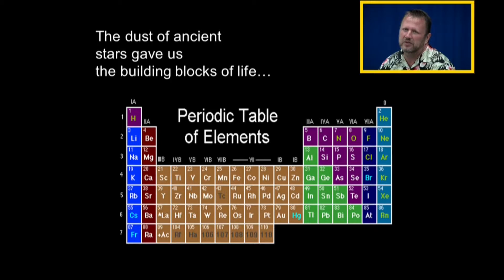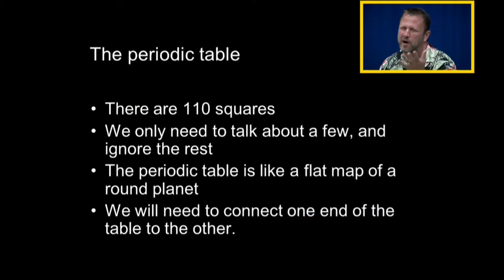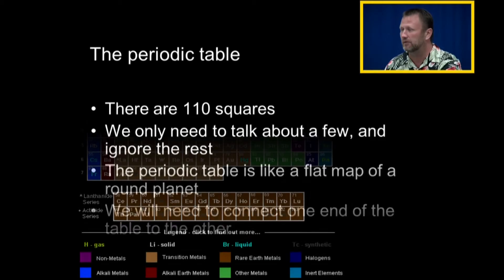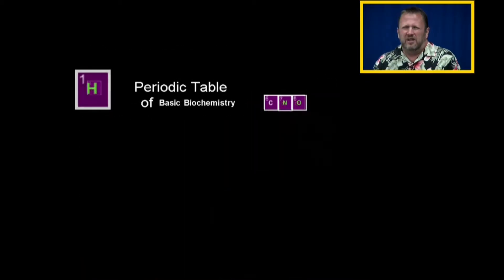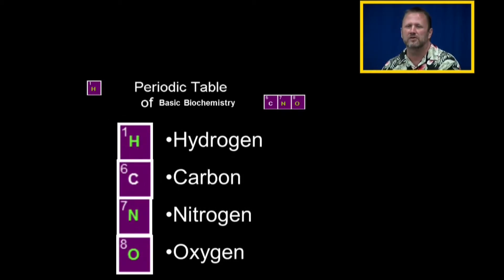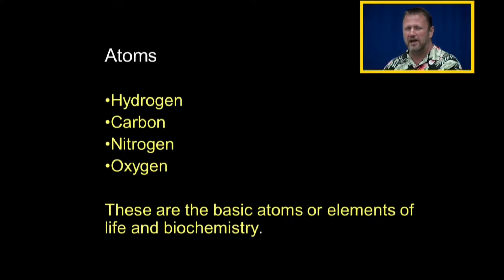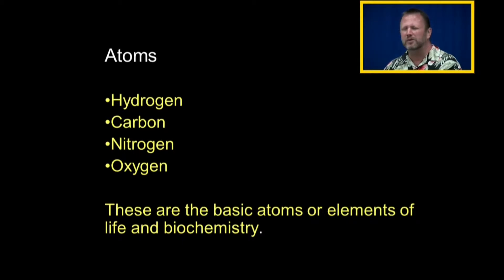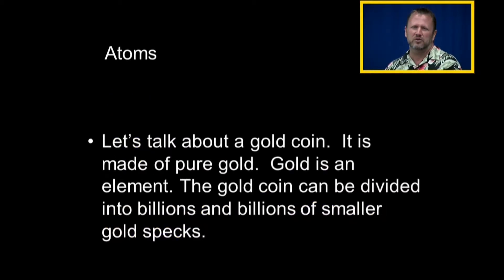It's the dust of ancient stars that gave us the building blocks of life — we call it the periodic table of the elements. There are 118 squares depending on which chemist you argue with, but we're going to talk about a few important ones for pharmacology. The basic building blocks of life are hydrogen, carbon, nitrogen, and oxygen — the little tinker toy set we use to build everything.